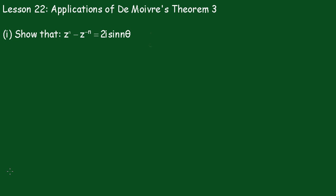In part 1 we have to show that Z^n minus Z^(-n) equals 2i sin nθ.